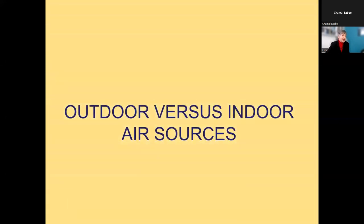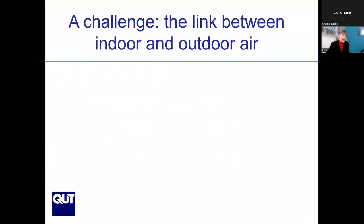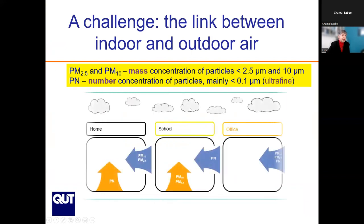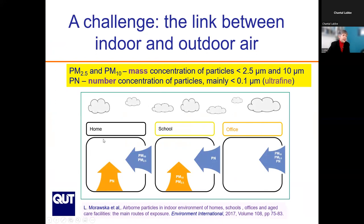Another aspect I mentioned is the impact of outdoor pollution on indoor air. We conducted a study to look at the links between indoor and outdoor air, specifically for PM2.5 and PM10 — mass concentrations of particles smaller than 2.5 and 10 micrometers — and particle number concentration, which is mainly ultrafine particles. We looked at studies published around the world for home, school, and office environments, and found that in each environment the situation was different in terms of sources.